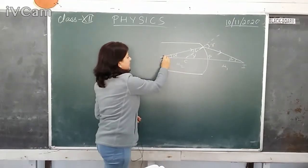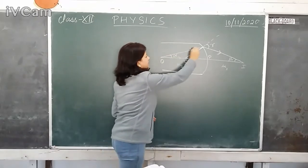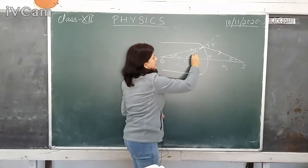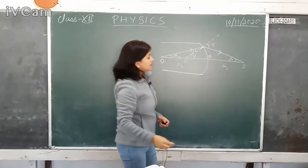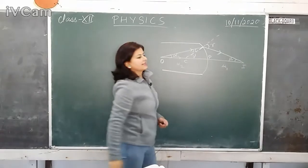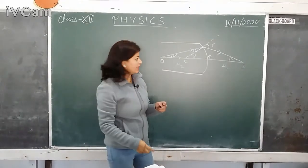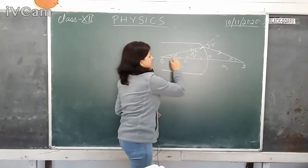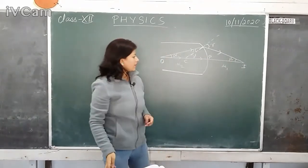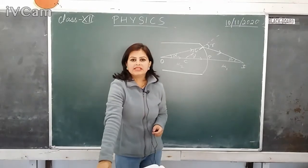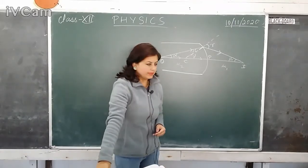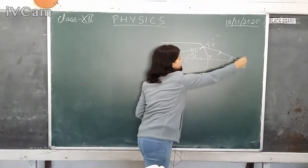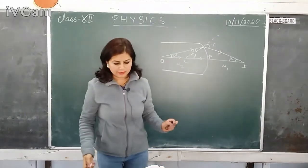The angle between the principal axis and the first incident ray is taken as alpha. The angle between the normal and this line is taken as gamma. The angle between the refracted ray and the principal axis is taken as beta. The image will be formed because we have taken one more ray crossing the optical center, and it will meet the first refracted ray at I, where the image is formed.